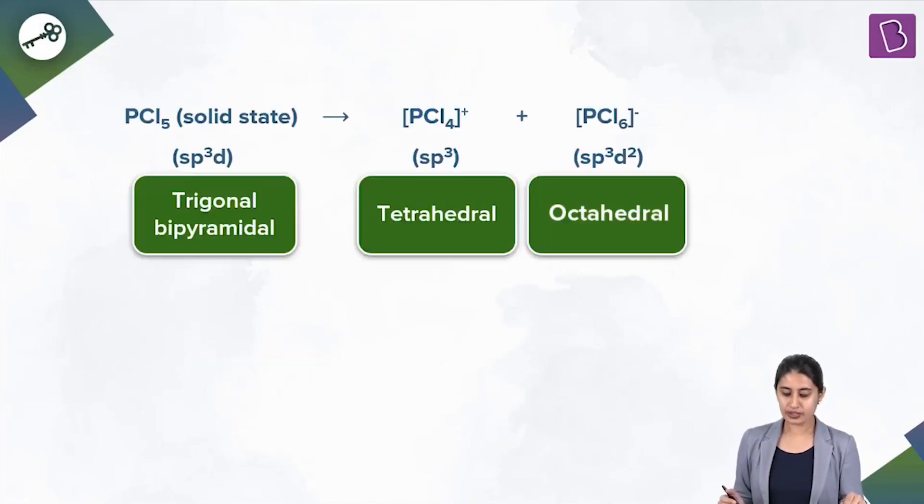But what about ionic state? In ionic state, all that you need to know is that PCL5 exists as PCL4+ plus PCL6-. You can see there is a positively charged species and a negatively charged species.